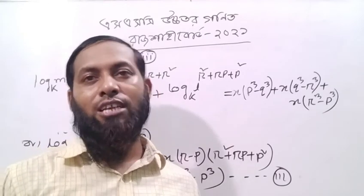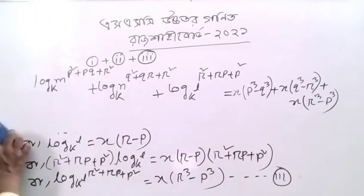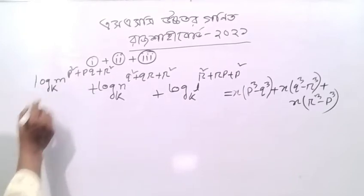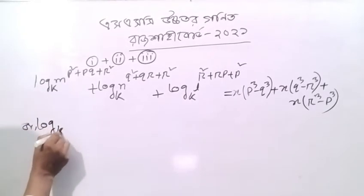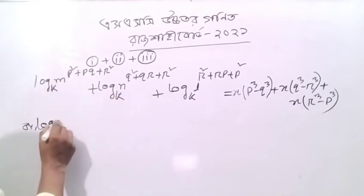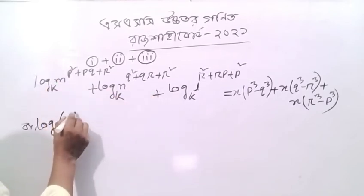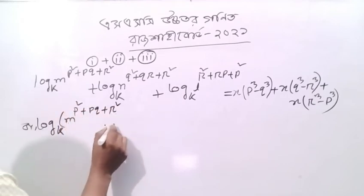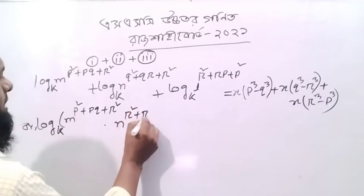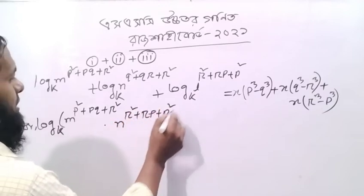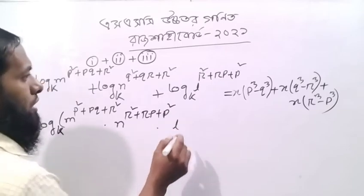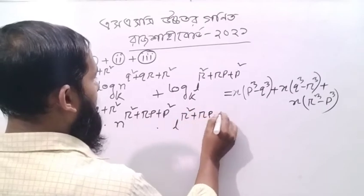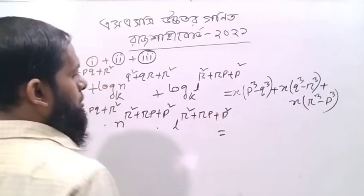Log k — m to the power p squared plus pq plus r squared, into n to the power r squared plus rp plus p squared, into r squared plus rp plus r squared, equal to r squared. r squared plus rp plus p squared equal to 0.